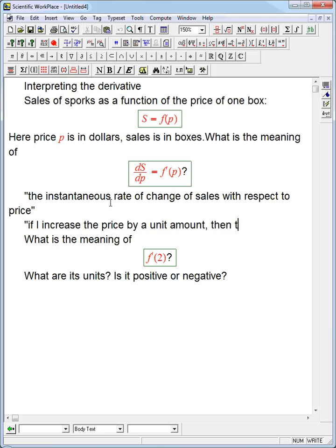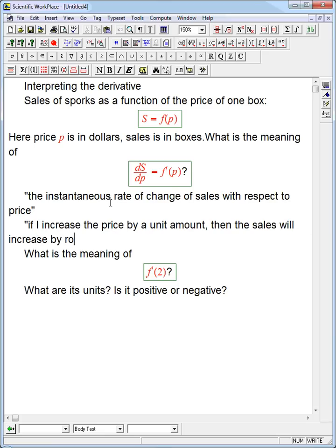then the sales will increase by roughly, and the roughly is because this is all about approximating, this is going to be ds not delta s, by roughly f prime of p.